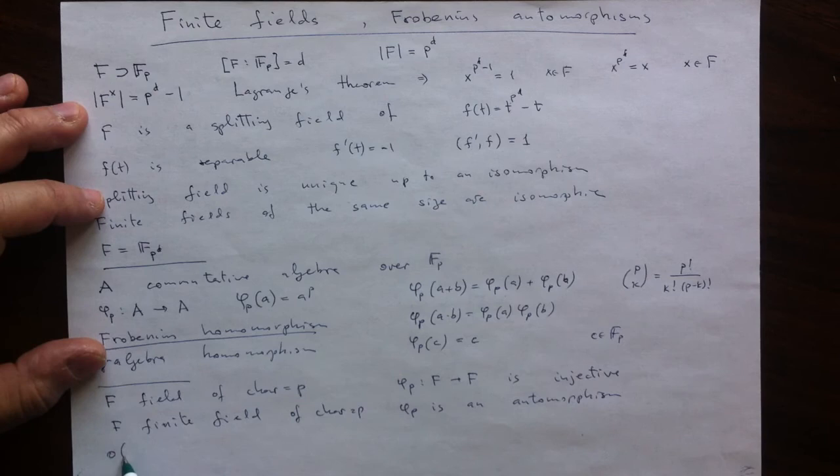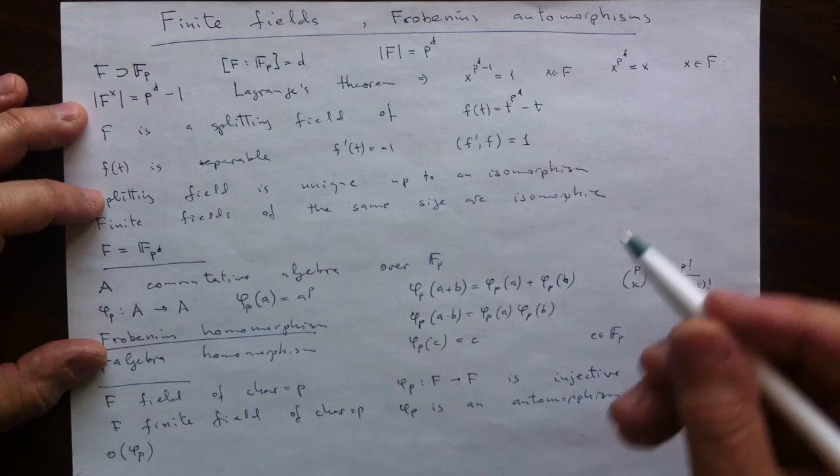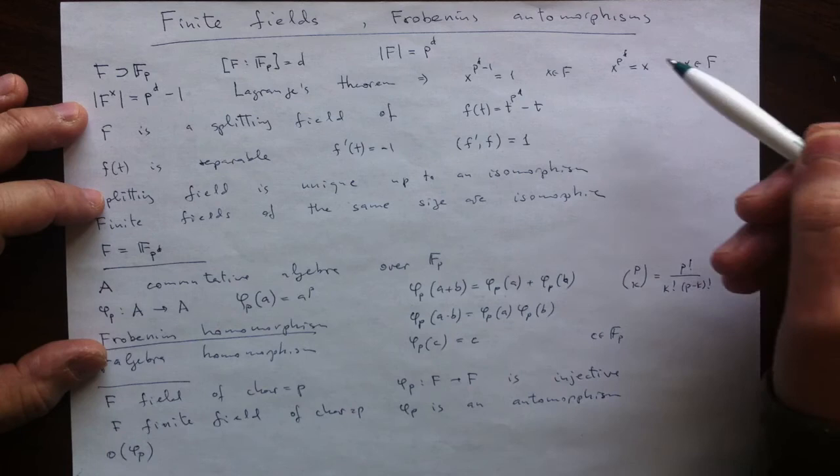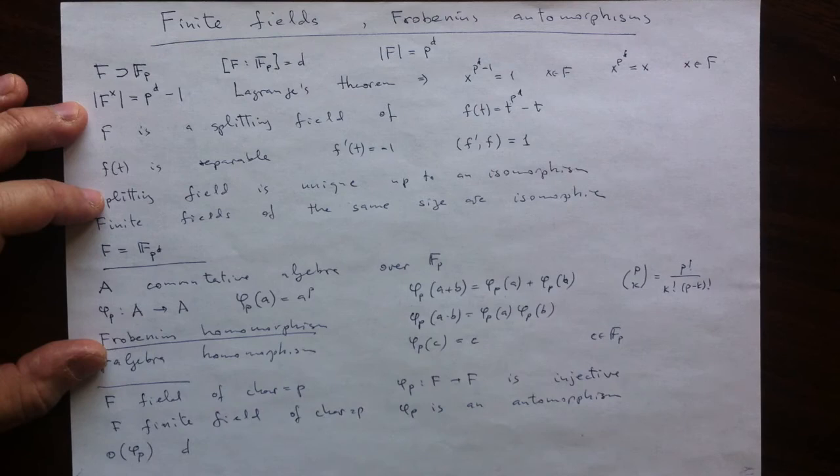And let's compute, let's really look into this question. Let's compute the order of this as an element of the automorphism group. So what is the smallest power, that is the order, of that symmetry, of that automorphism, which is identity? And we could immediately see from this identity satisfied by all elements of our field that the dth power of the Frobenius is the identity. So definitely it is a divisor of d.